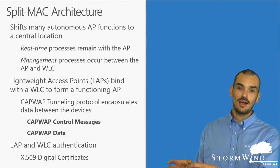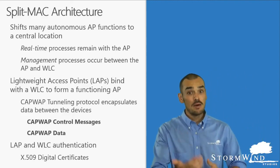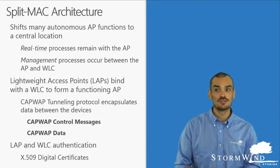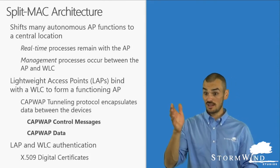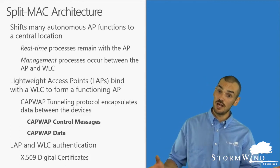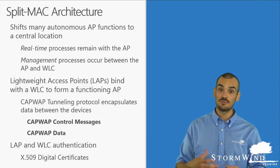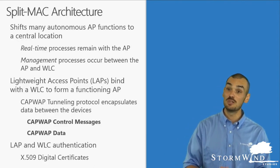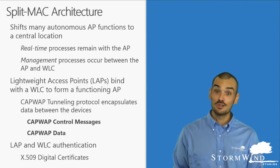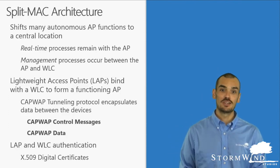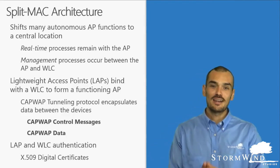Before we had cloud architecture, split MAC was the de facto standard. But now more and more organizations are looking at all three options: the autonomous architecture, a cloud-based architecture, and split MAC architecture. There are pros and cons to all three, just like we find anywhere else in life. You really need to look at it from a design perspective — which of course includes budget — to decide which one is going to be best for your own organizational requirements. That's all we've got. Take care.